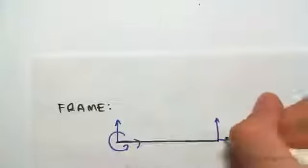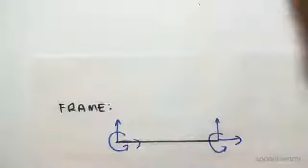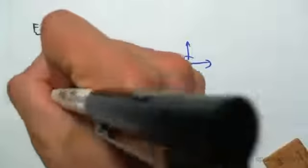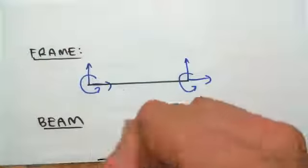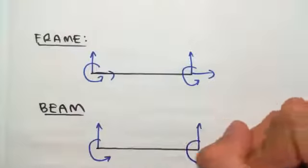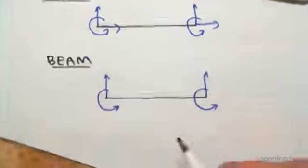The truss elements—sorry, not the truss—the beam elements. The beam element can only handle vertical and moments. The beam element looks like this: vertical and moments.